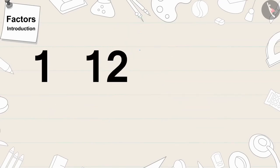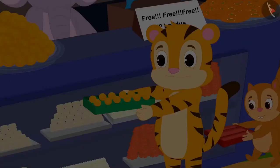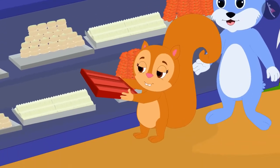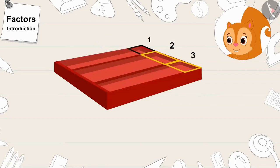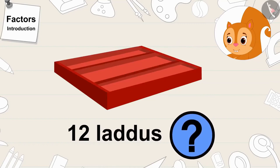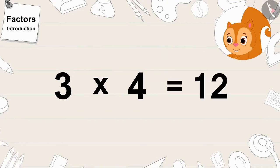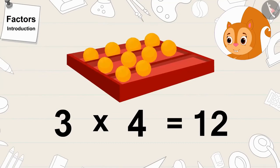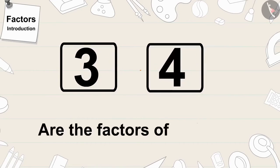Let's see who's next in the queue. Chanda is next in the queue. Chanda's box has one vertical line and three slots. Will twelve laddus fit in Chanda's box too? Three times four is twelve. Therefore, twelve laddus will also easily fit in Chanda's box. Or, we can also say that the numbers three and four are factors of twelve.